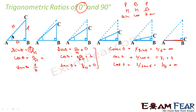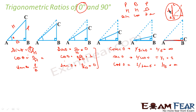Similar to this, instead of decreasing theta to 0, if we keep increasing this value of theta to 90 degrees, we will get something like this. Point C will move until we have exactly 90 degrees — C is here and B will coincide with B. So AC will be equal to both h and p, and b will be equal to 0. So h will equal p and b will equal 0.